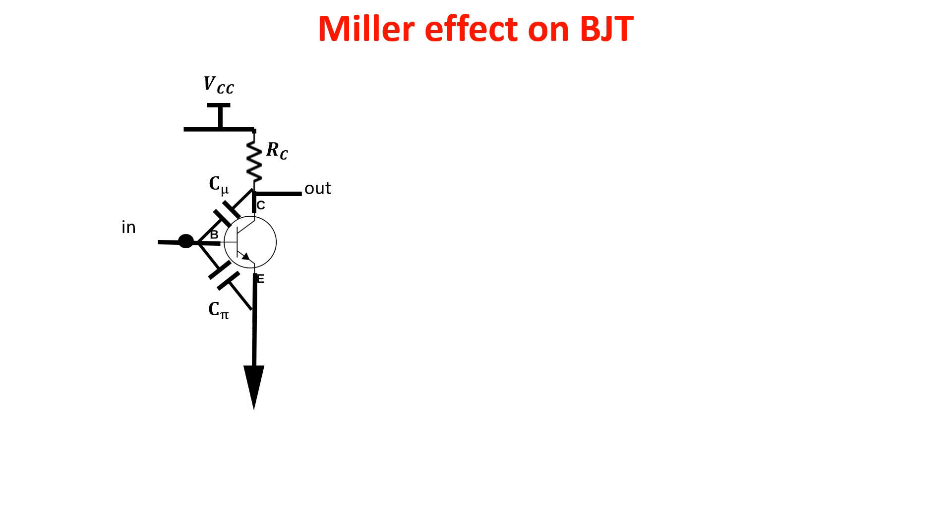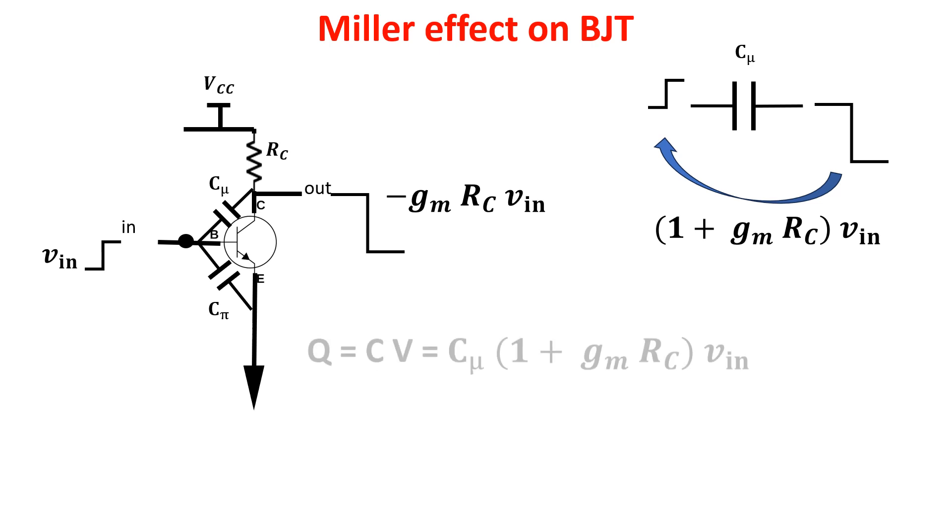But Cmu is in the gain path because Cmu is between the input and the output of the common emitter amplifier. So a little voltage in input is amplified to a large negative voltage in output. So the voltage across Cmu is Vin plus GM·RC·Vin, and the charge going into Cmu is this one here.